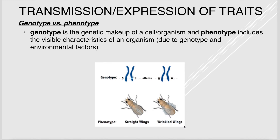Genotype is the genetic makeup of a cell or organism. Phenotype refers to the expressed, visible characteristics — things you can see and measure. Phenotype is due to the genotype as well as environmental factors. For example, a fly with genotype SS has straight wings, while one with genotype WW has wrinkled wings.